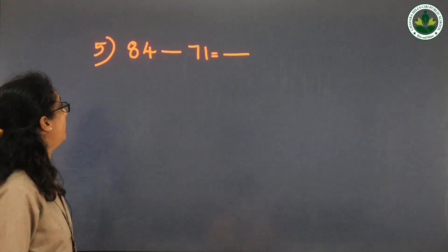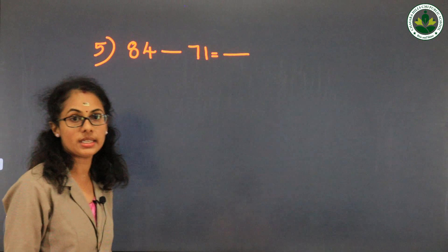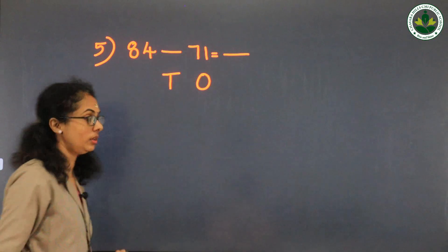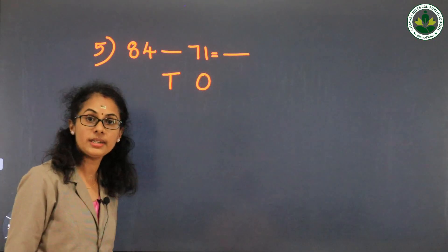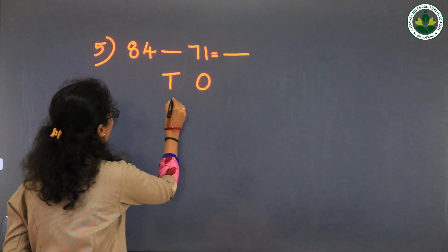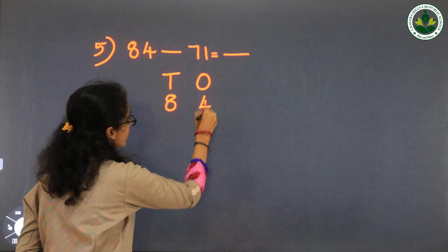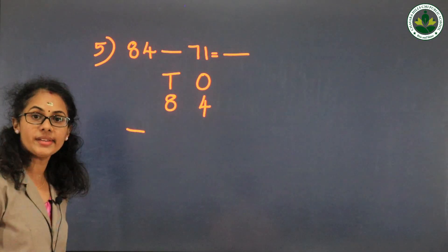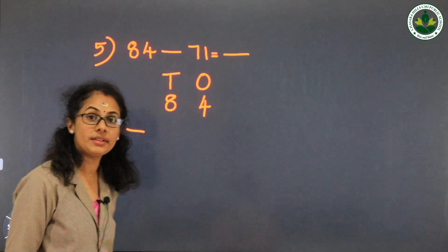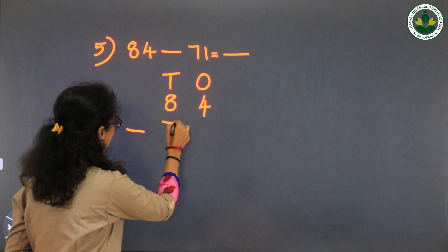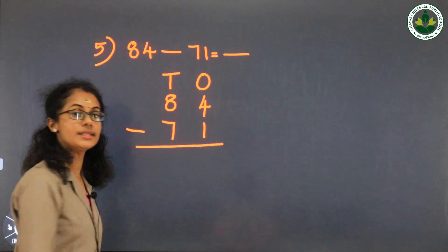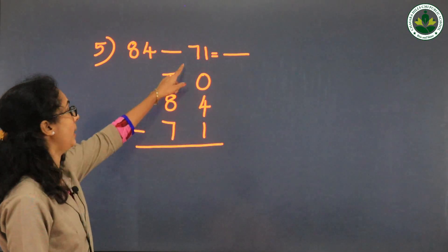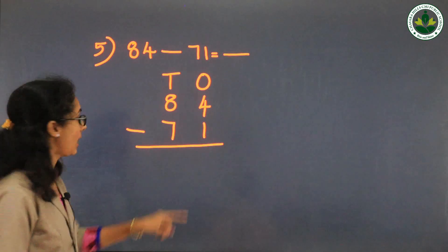84 minus 71. In 84, there are 8 tens and 4 ones. In 71, there are 7 tens and 1 one. Write them in the tens and ones columns respectively.